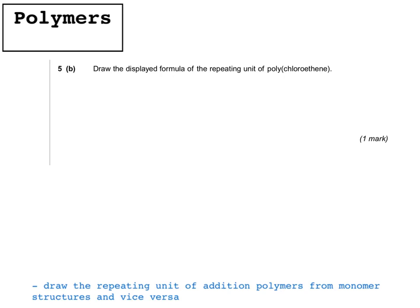Here's an example of a typical question where you have to draw the repeating unit of an addition polymer. So it says here, draw the displayed formula of the repeating unit of polychloroethene. So you've got to realise that to name polymers, you basically just take the monomer's name and put poly in front of it. So the first step here is to work out what chloroethene is.